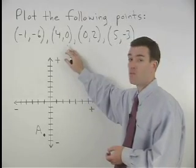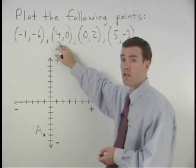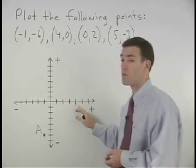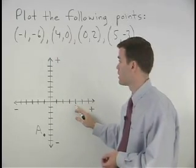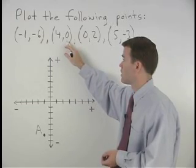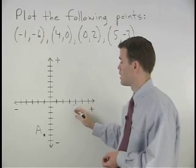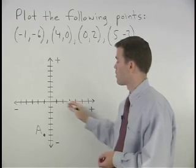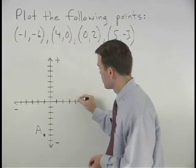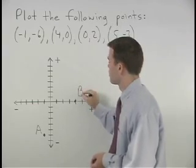For our second point, since the x coordinate is 4, that tells us we move 4 units to the right from the origin. Since the y coordinate is 0, we move 0 units up or down. So we go 4 to the right and 0 up or down, and we can label that point B.